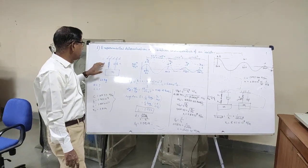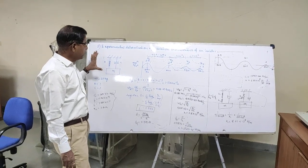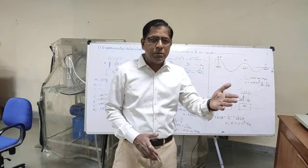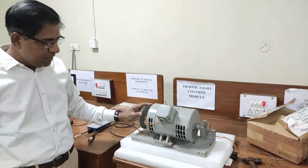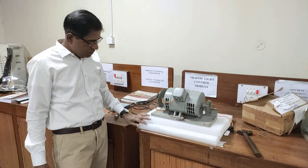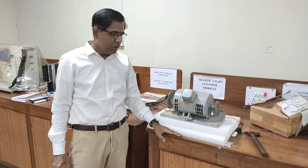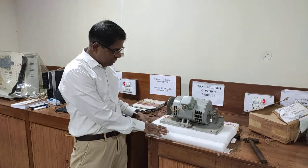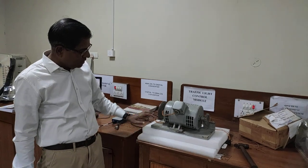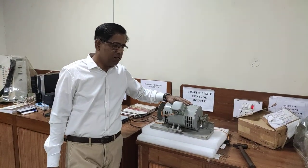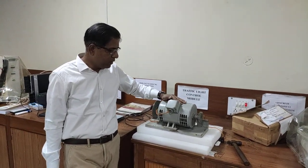Vibration characteristics of an isolator means we will be calculating the value of C and the value of K. For this experiment we have an experimental setup where a mass is kept on two foam sheets, and these two foam sheets are kept on a firm platform. On these two foam sheets a mass is kept — this is a stationary mass of 22 kg, which is the mass of this motor.